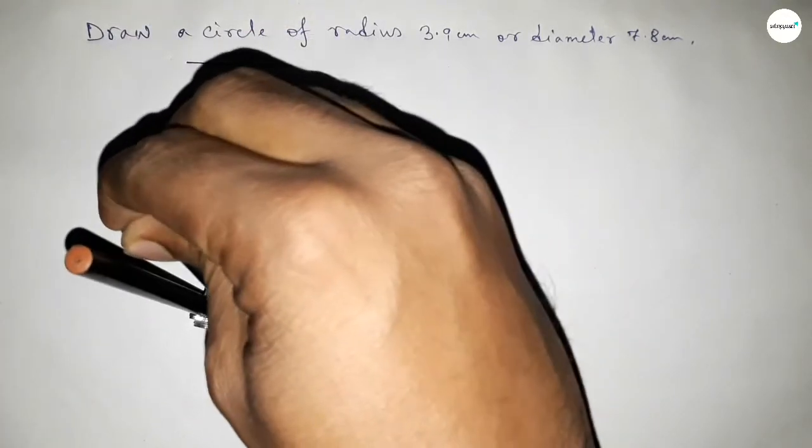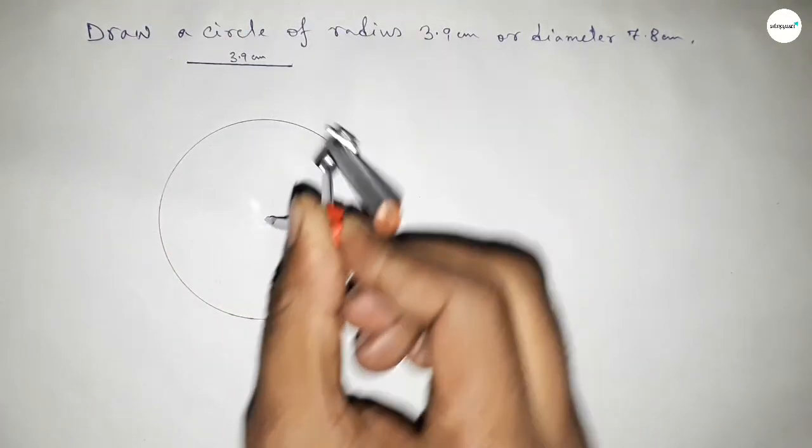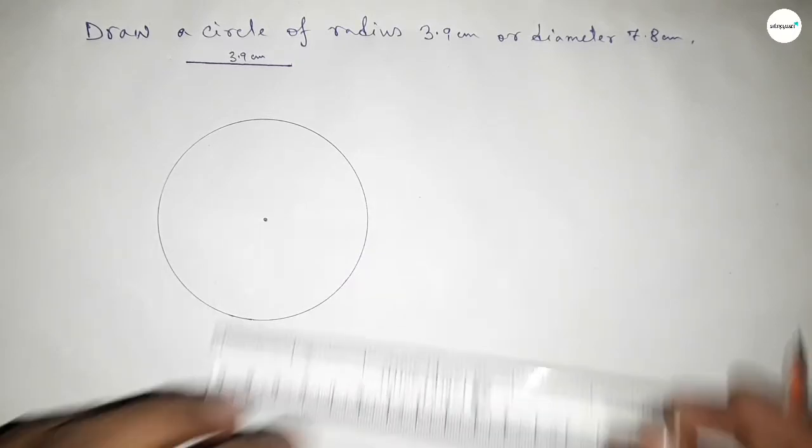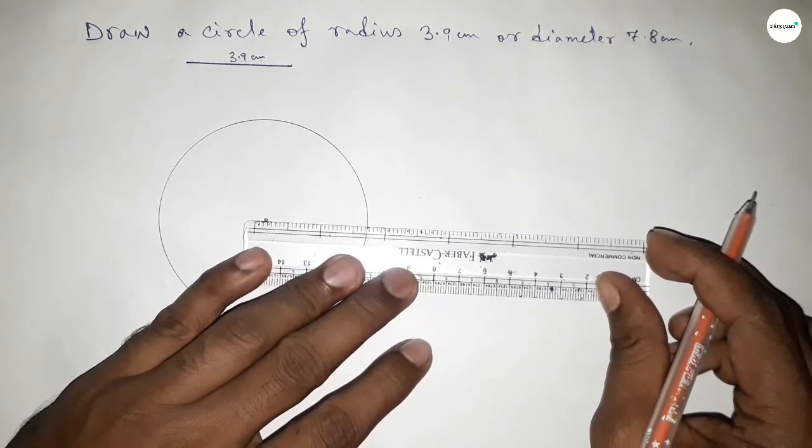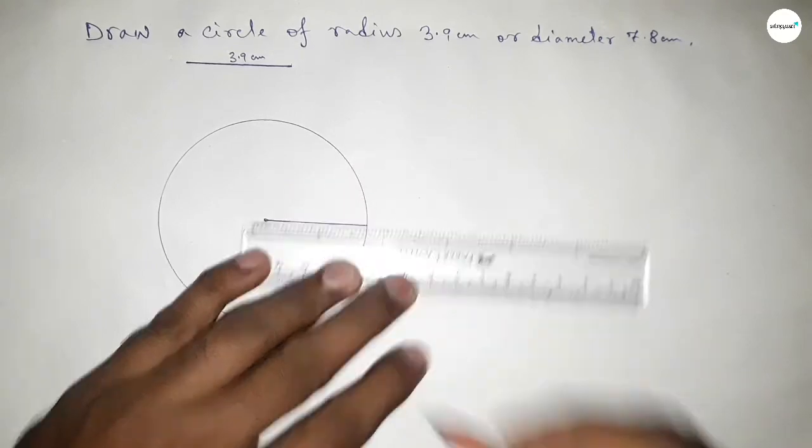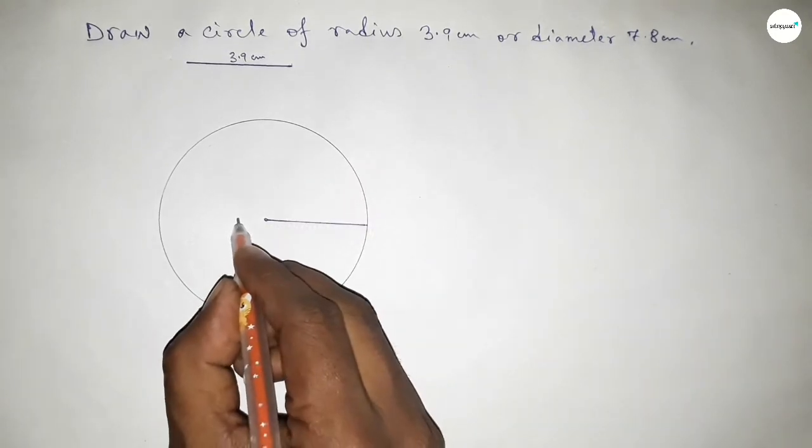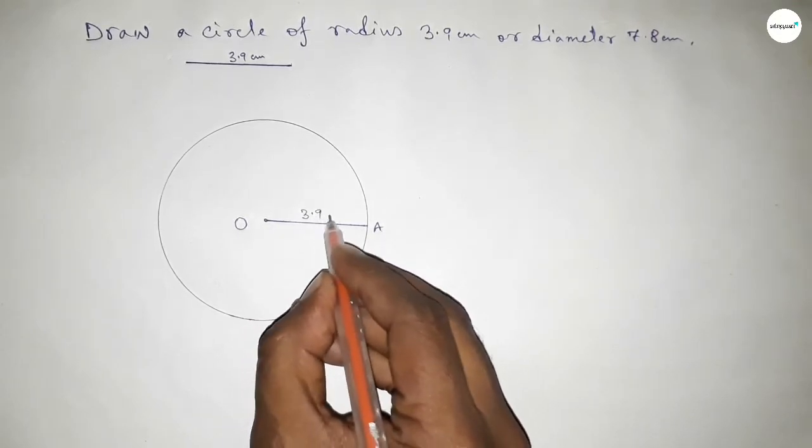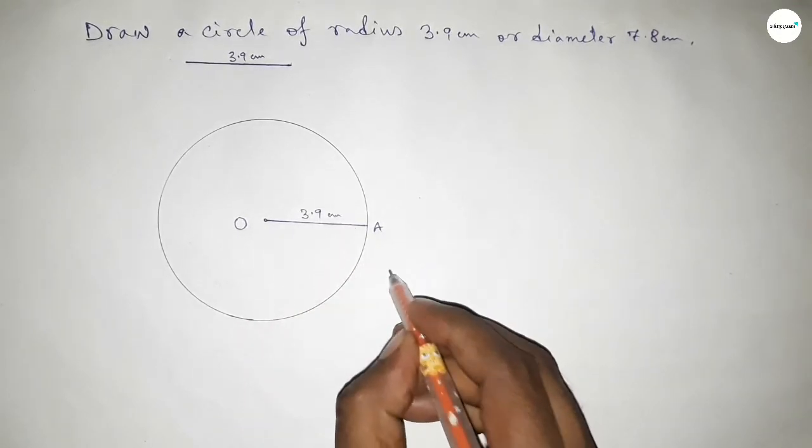By this way, drawing an arc which represents a circle of radius 3.9 centimeter. Now joining this one which is radius of the circle. Taking here center O and here A, so OA equals 3.9 centimeter.